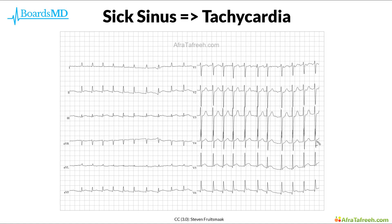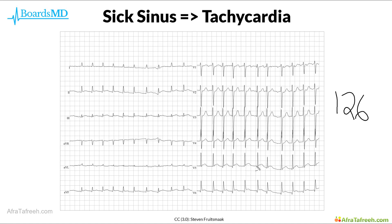Counting 21 QRS complexes and multiplying 21 by 6, because there are 6 units of this 10-second strip in a minute, we get 126 beats per minute. Additionally, we can also appreciate that this patient has an irregularly irregular rhythm. We can especially appreciate this on the right-hand side of the EKG, where the intervals between QRS complexes vary between wider and more narrow spacings.